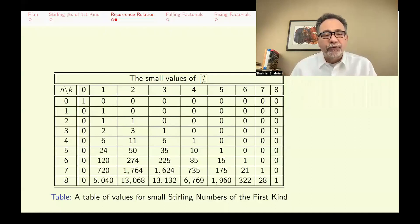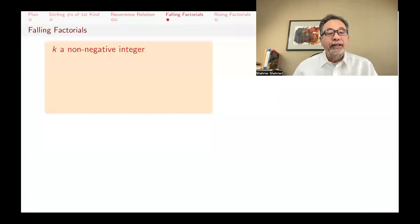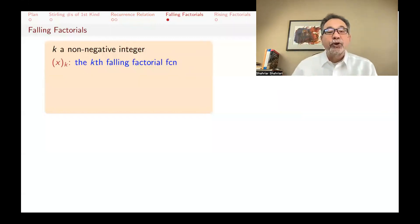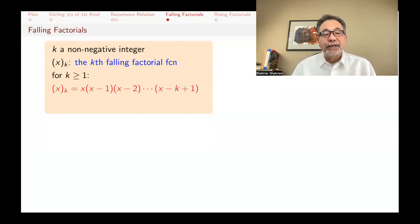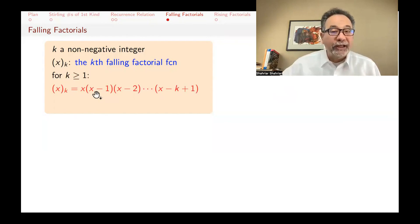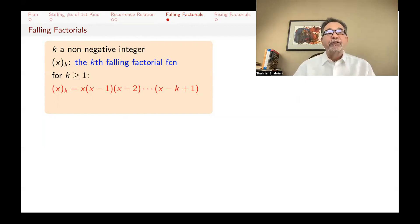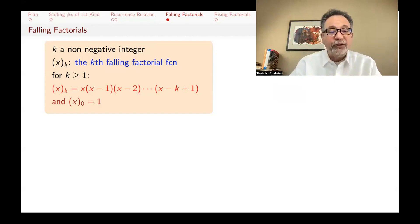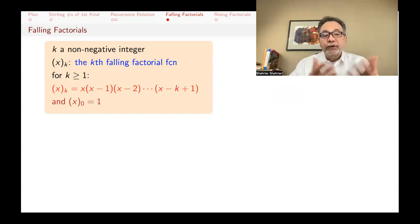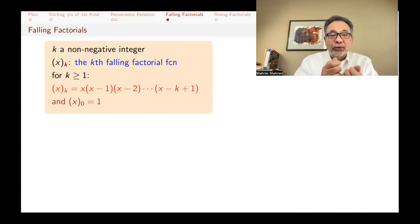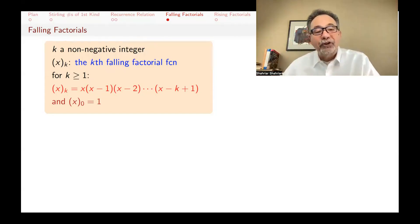Now let's talk about falling factorials. If k is a non-negative integer, the k-th falling factorial function (x)_k is defined as x times x minus 1 times x minus 2 all the way to x minus k plus 1 — there are k factors. X is the first factor, x minus 1 is the second, x minus 2 is the third, and the k-th factor is x minus k plus 1. If k is 0, then (x)_0 is defined to be 1. For example, if you plug in n for both x and k, you get the factorial function. This is a truncated factorial starting with x and stopping after k terms.